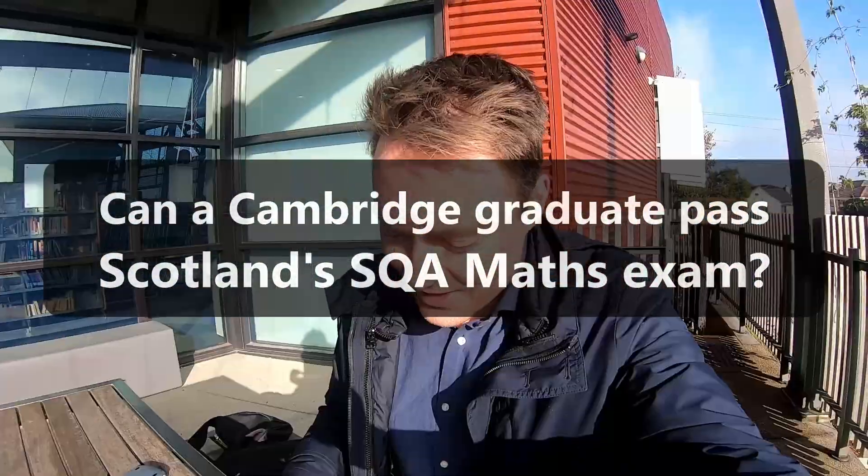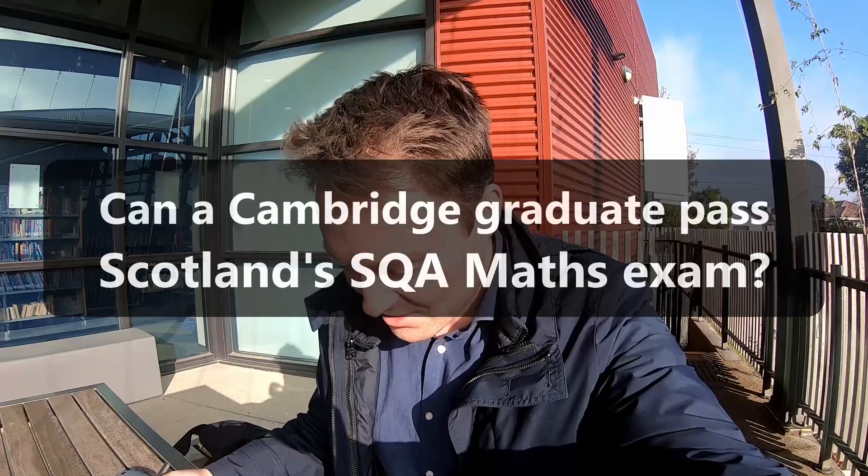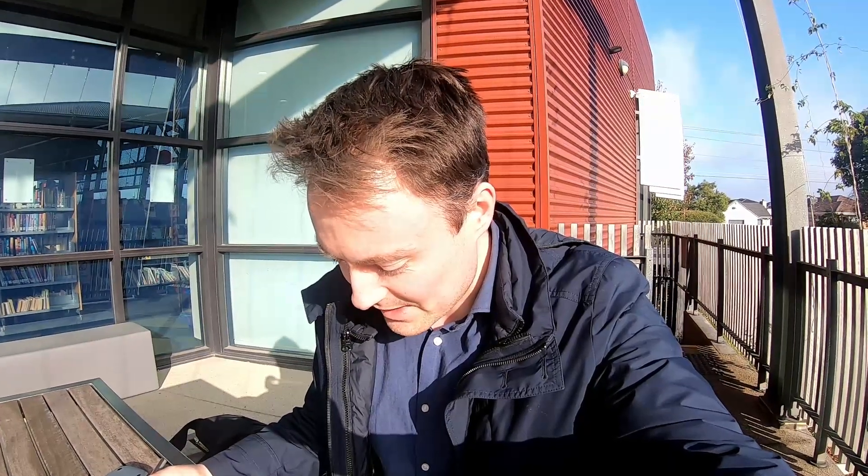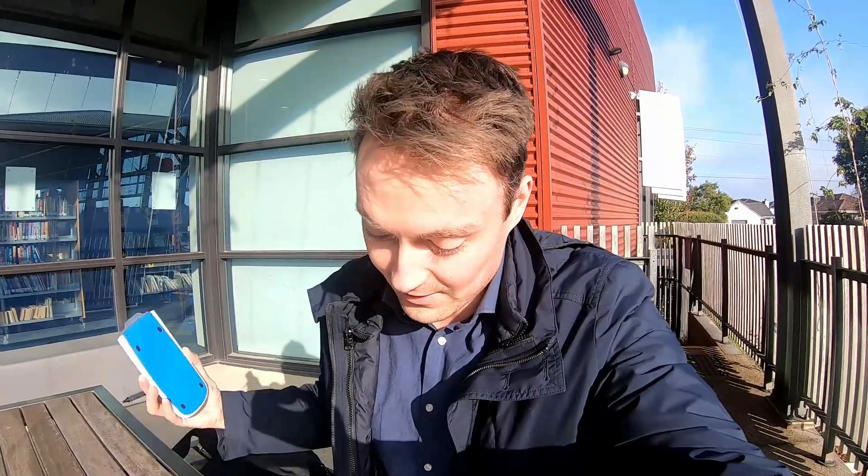So I'm here at Clayton Library and I've decided to sit Scotland's maths exam. This is national level five. It seems to be the 2018 paper. It's actually in two parts. The first part requires me to refrain from using a calculator at 50 marks and I've got just over one hour to do it. Let's go.